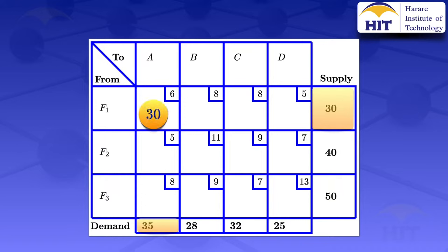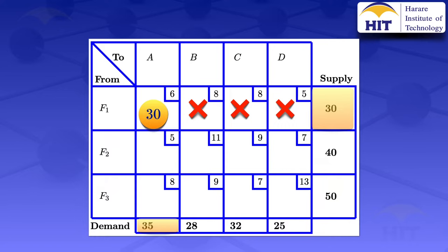But the moment we allocate the 30 units there, that means for source F1, we have already exhausted its supply capacity, so we can no longer allocate anything else in the other cells in that row. So I would have to cross them out, indicating that we can no longer allocate anything, because if we allocate anything in that row it will exceed the supply for source F1. Since we can no longer allocate in that row, we now move on to the second row.